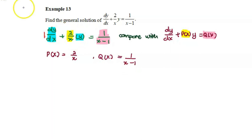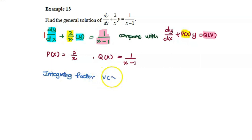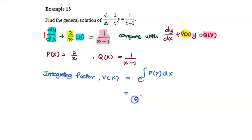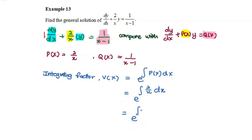Next, we will be finding the integrating factor, written as v(x). Finding v(x): it is e to the power of the integral of P(x) dx, which gives e to the power of the integral of 2 over x with respect to x. This equals e to the power of 2 ln|x|, which simplifies to x squared.